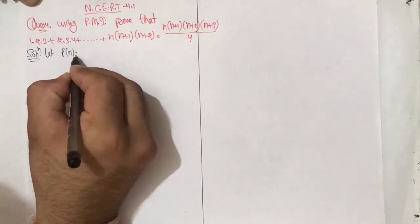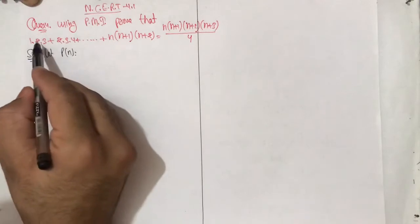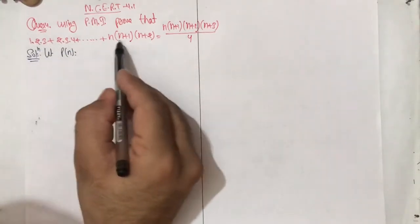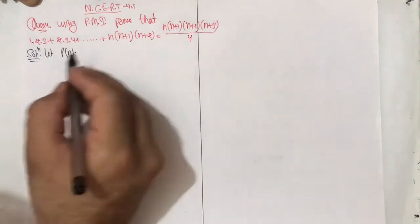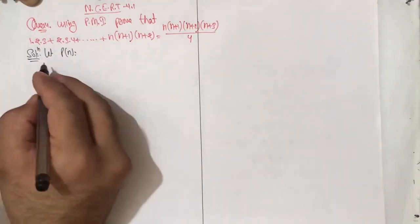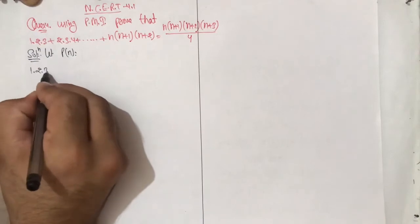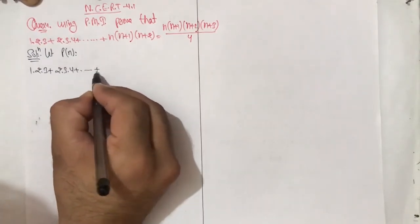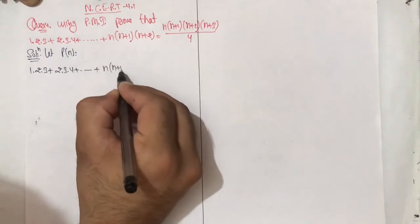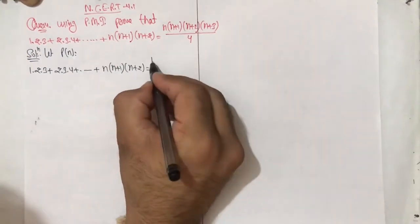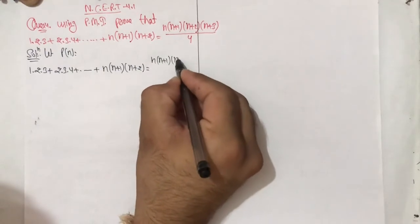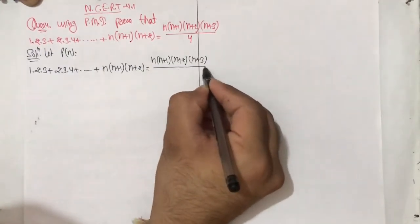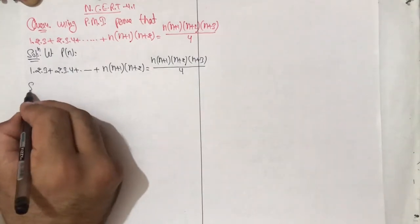Let P(n) be the given statement. वैसे तो आप P(n) is equal to this भी लिख सकते हो, और वो prove करेंगे। उसमें left hand और right hand side का use हो जाएगा। P(n): 1·2·3 + 2·3·4 + ... + n(n+1)(n+2) = n(n+1)(n+2)(n+3) / 4.